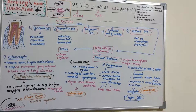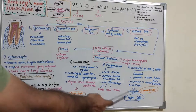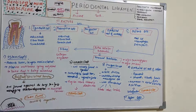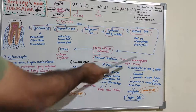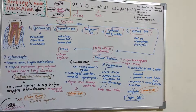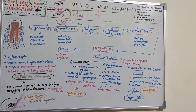Defense cells are the common defense cells of PDL: mast cells, eosinophils, and macrophages. Now we need to study the extracellular substances.